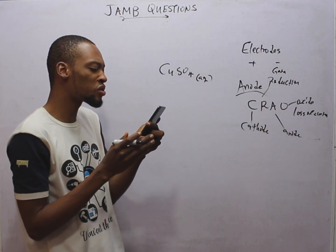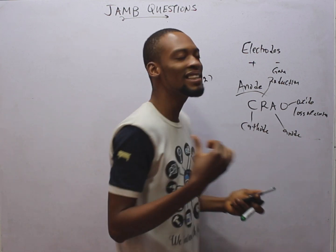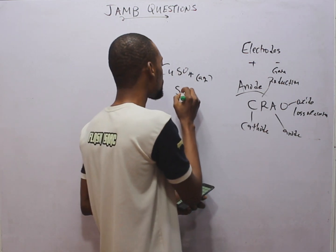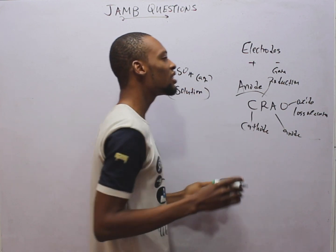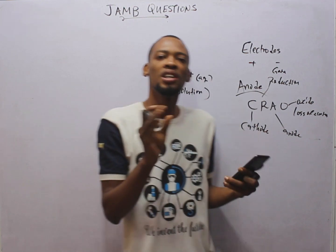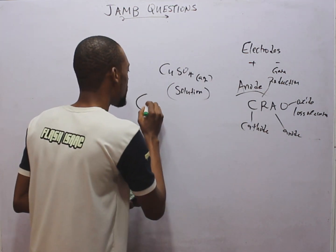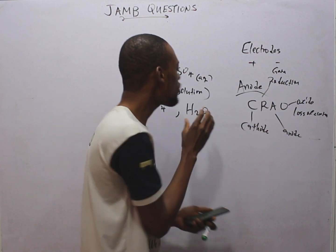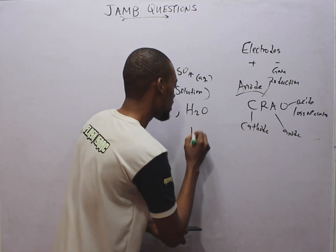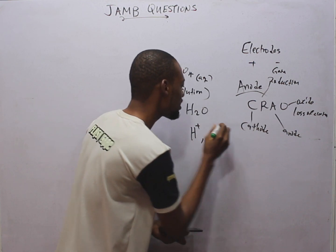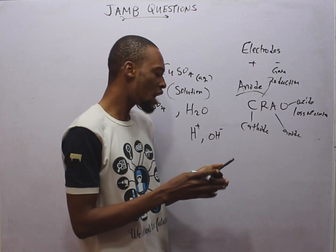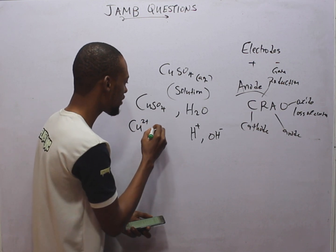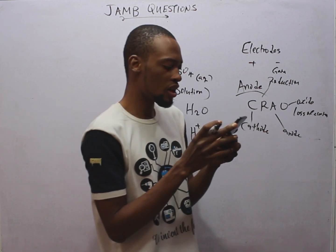In the electrolysis of copper sulfate aqueous — what does aqueous mean? Anytime a compound is given with 'aq' below it, it simply means that the copper sulfate is in solution, dissolved in water. So we have copper sulfate and water present. When water dissociates, we have H⁺ ions and OH⁻ ions. When copper sulfate dissociates, we have Cu²⁺ and SO₄²⁻.